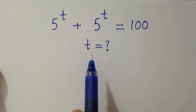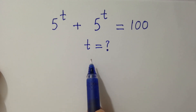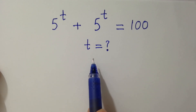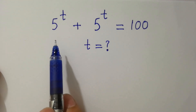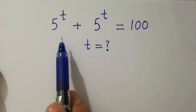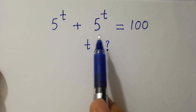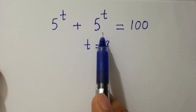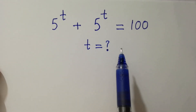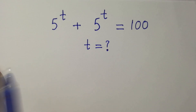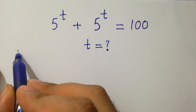Hello friends. Find the value of t if 5 to the power t plus 5 to the power t equals 100. Let's have a solution.